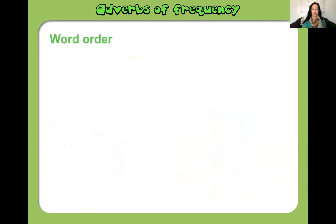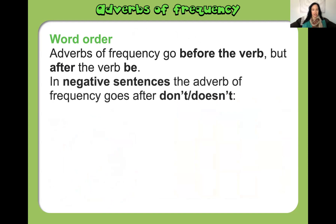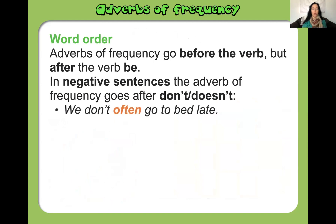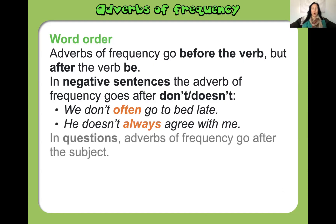Now let's do some word order. Adverbs of frequency go before the verb, but after the verb 'be'. In negative sentences, the adverb of frequency goes after 'don't' or 'doesn't'. For example: 'We don't often go to bed late.' 'He doesn't always agree with me.'